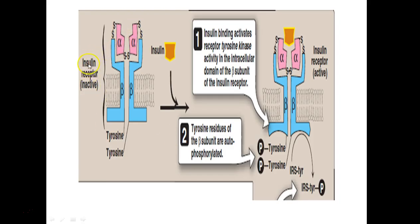The insulin receptor in its inactive state has 2 alpha and 2 beta subunits, with the beta subunits having tyrosine kinase activity. When the insulin molecule binds to the alpha subunit, there is activation of the tyrosine kinase domains of the beta subunit. The tyrosine residues of the beta subunit are autophosphorylated, and once autophosphorylated, they act on the insulin receptor substrate, leading to phosphorylation of tyrosine residues in the insulin receptor substrates.